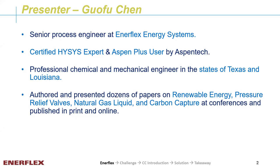My name is Guo Fu Chen. I'm a senior process engineer at Enerflex Energy Systems. Starting last year, Aspen Tech launched a user certification program, and I'm certified as an Aspen HYSYS expert. In addition, I'm also a professional chemical and mechanical engineer, licensed in the state of Texas and Louisiana. My areas of expertise are renewable energy, pressure relief valves, natural gas liquids, and carbon capture.